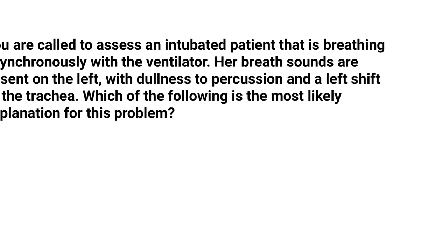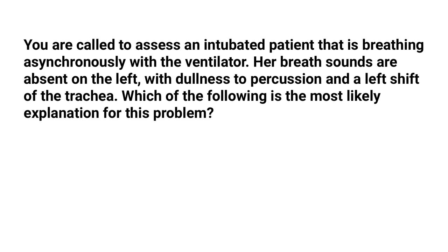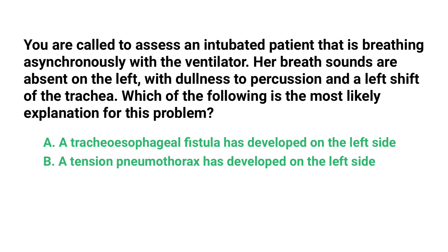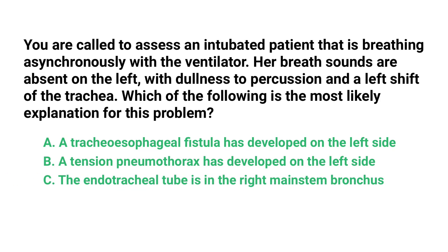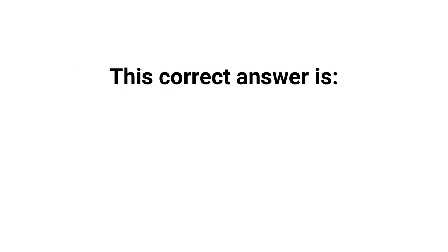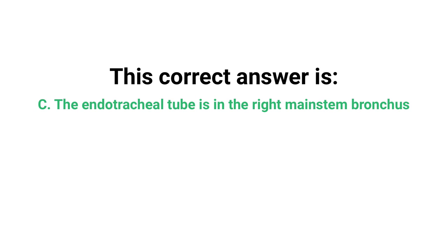You are called to assess an intubated patient that is breathing asynchronously with the ventilator. Her breath sounds are absent on the left side with dullness to percussion and a left shift of the trachea. Which of the following is the most likely explanation? A) A tracheoesophageal fistula has developed on the left side, B) a tension pneumothorax has developed on the left side, C) the endotracheal tube is in the right mainstem bronchus, or D) the patient is experiencing diffuse bronchospasm. The correct answer is C: the endotracheal tube is in the right mainstem bronchus.